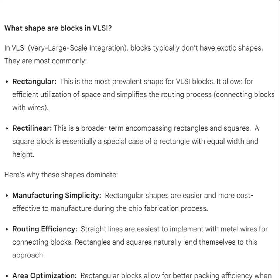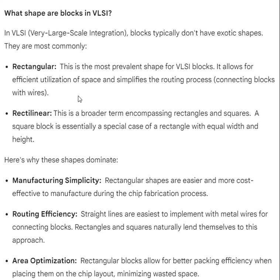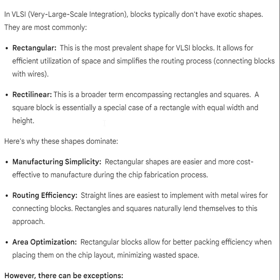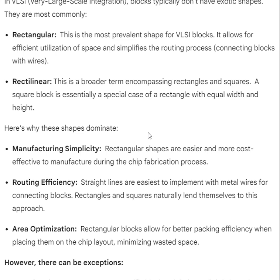What shape are blocks in VLSI? In VLSI (very large-scale integration), blocks typically don't have exotic shapes. They are most commonly rectangular — this is the most prevalent shape for VLSI blocks. It allows for efficient utilization of space and simplifies the routing process of connecting blocks with wires. Rectilinear is a broader term encompassing rectangles and squares.